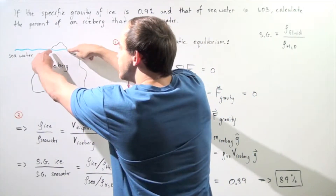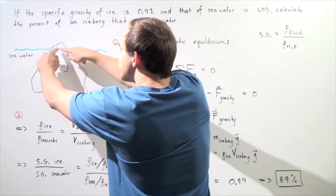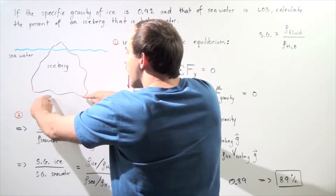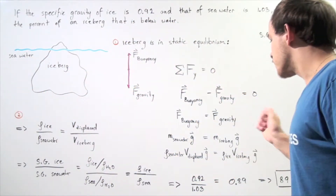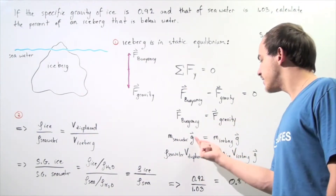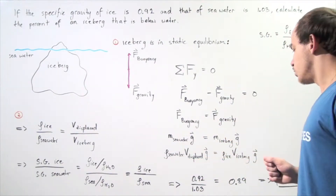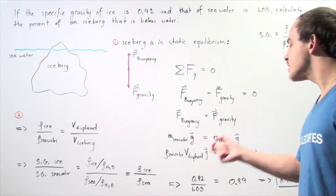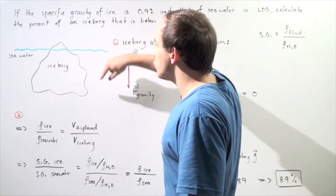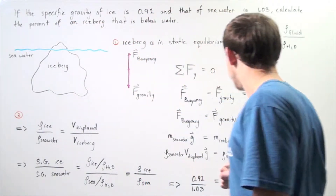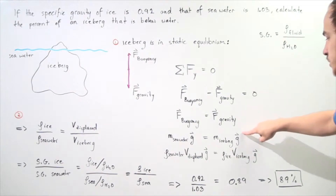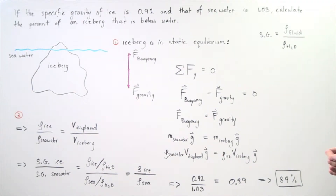This entire portion that is below our seawater is the volume displaced. Let's represent that as V_displaced, and multiply by g. This is equal to the density of the ice multiplied by the entire volume of the ice — including the top portion above water — represented as V_iceberg, multiplied by g. Notice the g's cancel.